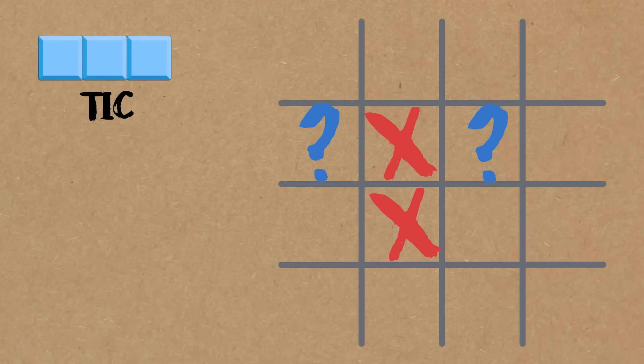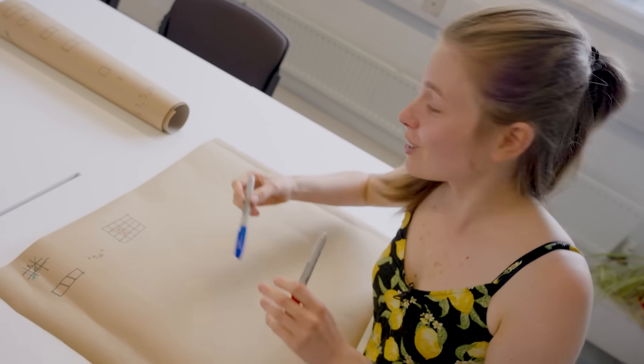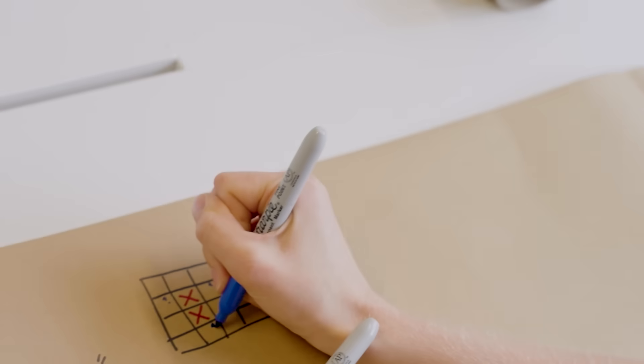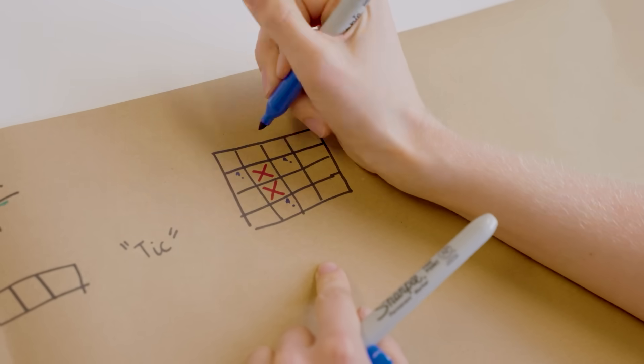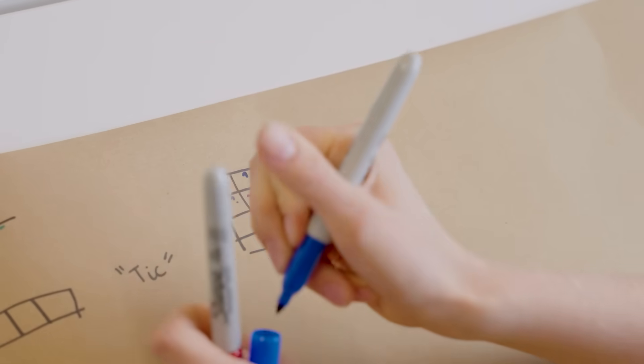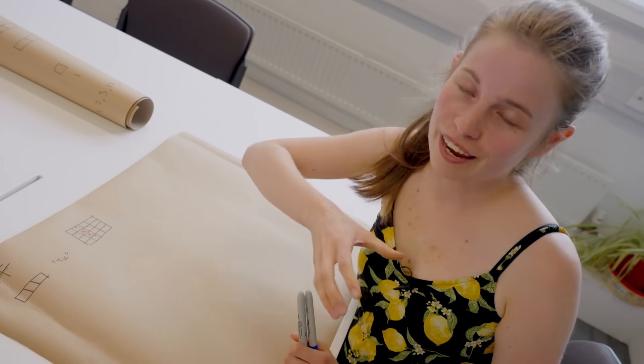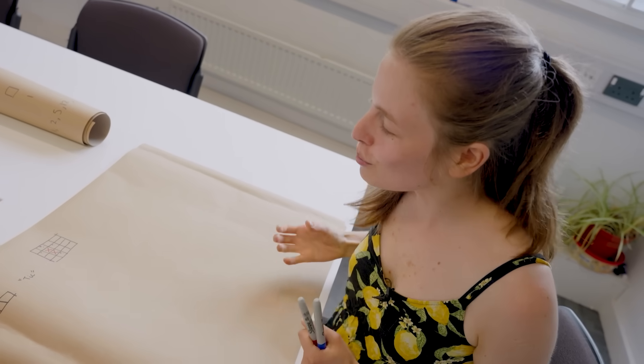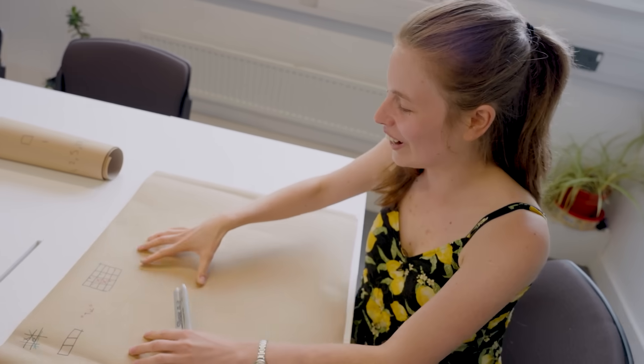The second player has played one of those. I don't actually care which at this stage. Because what the first player is going to do is now play this one. Now where can the second player play? Well, it kind of doesn't matter because they've already lost at this point. If they play here, the first player will just go there. If they play here, the first player will go there.